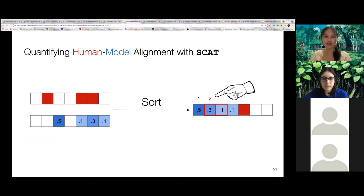And the more attention the model assigns to the supporting context, the lower the alignment score. We also use two additional alignment metrics, which are included in our paper.